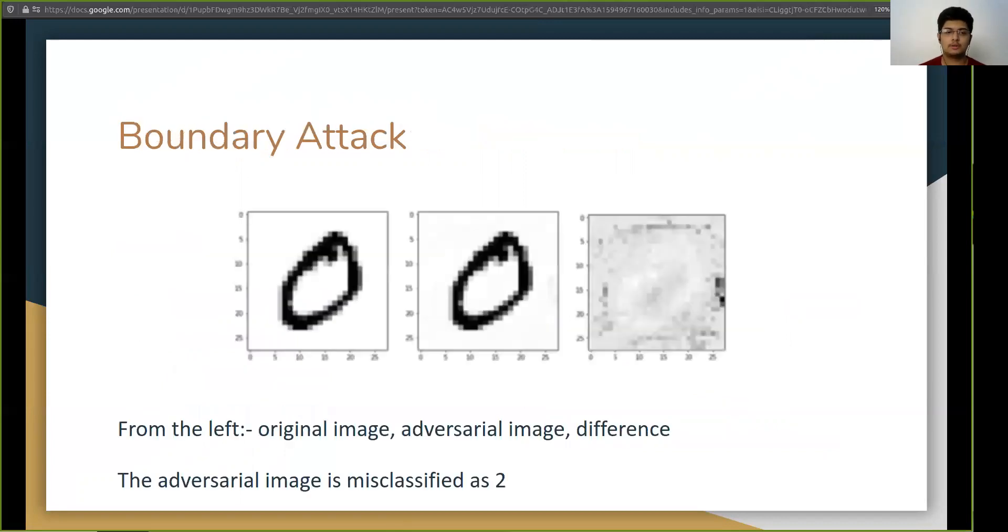So let me show you how a boundary attack looks like. On the left is an image of zero and in the middle is also an image of zero but it's a boundary attack on the left one and the model which predicts the left image as zero with very high confidence is completely misled into believing that the middle image is a two. This attack is the boundary attack and you can see the actual pixels that the attack changes on the right.